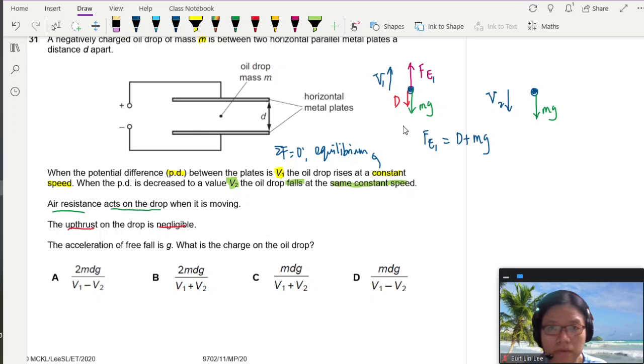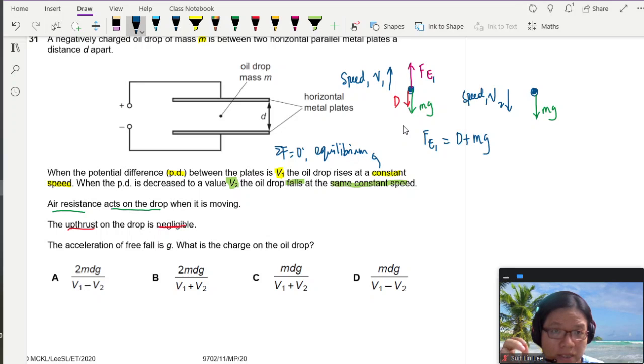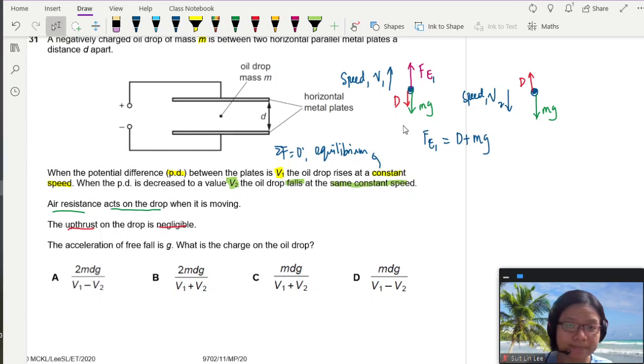Okay, the potential. So in this case, right, when you decrease your potential, the speed is going down. Sorry, this is lower case v. Let me label properly again. So speed is going up. Drag force is going down. In this second case, speed V2 is going down. The oil drop is falling. Meaning the drag force is pointing up. This is D.